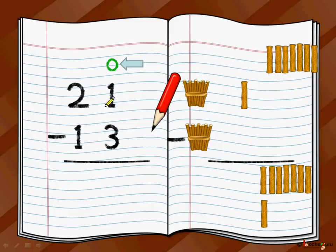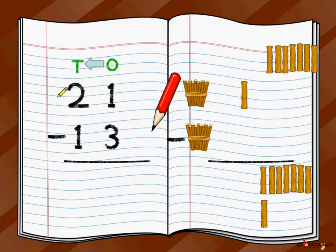Numerically, on the left side, you do exactly the same. Start from the ones position: you want to do one minus three. But you cannot do that — from one you can only remove one stick or zero sticks, you cannot take away more than you have. So the ones position says, 'Hey neighbor tens, can you give me a bundle or ten sticks?' The neighbor tens says, 'Sure!' and gives you a ten. So now the ones position becomes ten plus one, which is eleven. Now you can easily subtract eleven minus three.